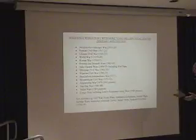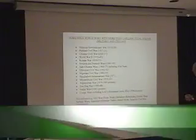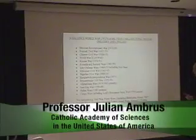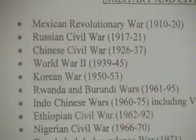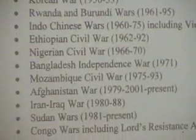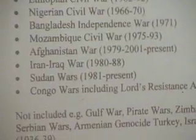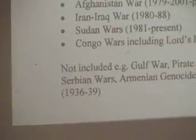It doesn't include a large number of other wars because in those less than one million people died. The Gulf War, the Armenian Genocide in Turkey after World War I, the Spanish Civil War, and Israeli wars are all not listed because they resulted in less than one million deaths. But there was practically not a single year since World War I that some war was not going on somewhere and people weren't being killed.